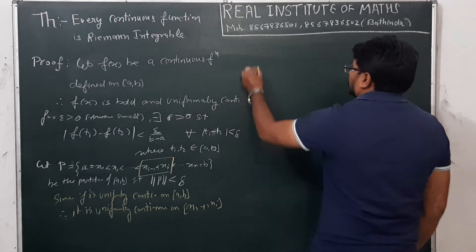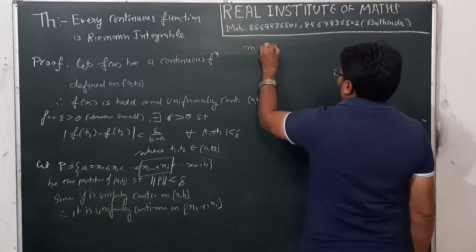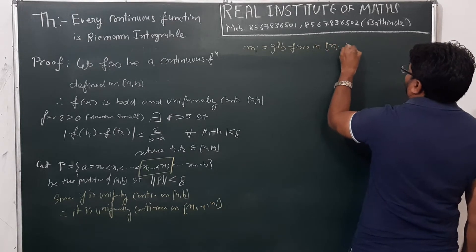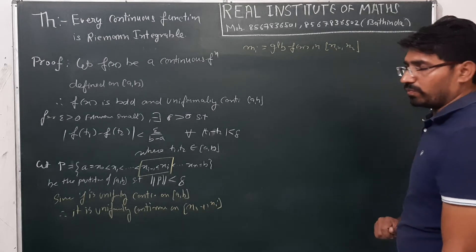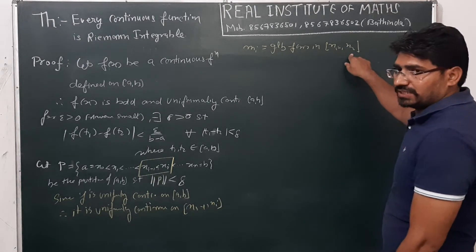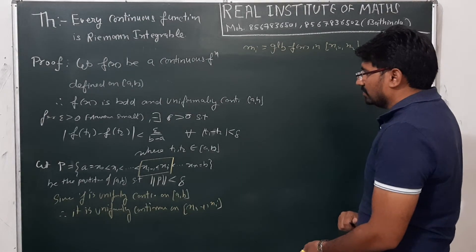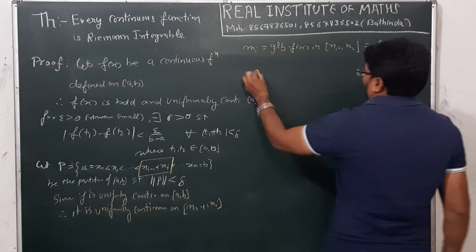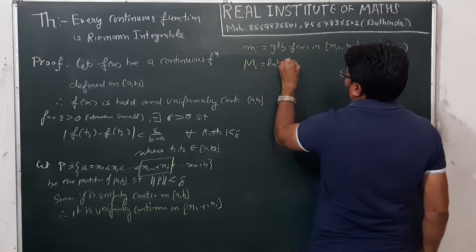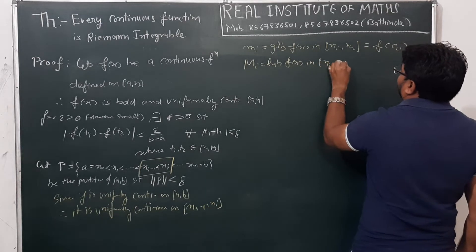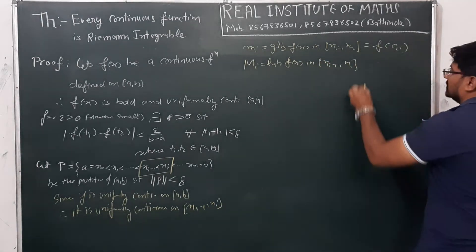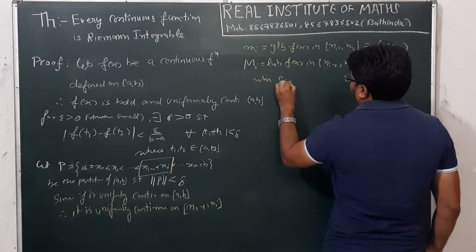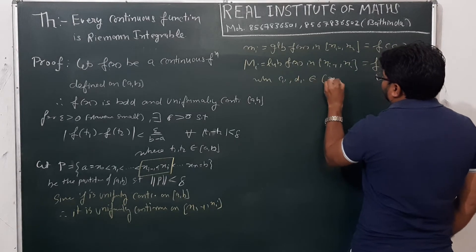And capital M_i is the least upper bound (supremum) of f(x) on the interval [x_{i-1}, x_i], which we say is f(d_i). One thing is confirmed: both c_i and d_i belong to the interval [x_{i-1}, x_i].